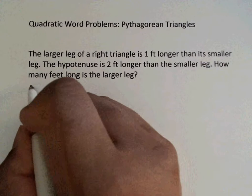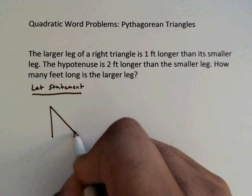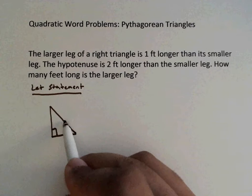For my let statement, I like to just draw a picture. So I'm going to draw a picture of a triangle. There goes my triangle, and it's a right triangle. So we know the opposite side of the 90 is my hypotenuse. This is my short leg. This is my long leg.